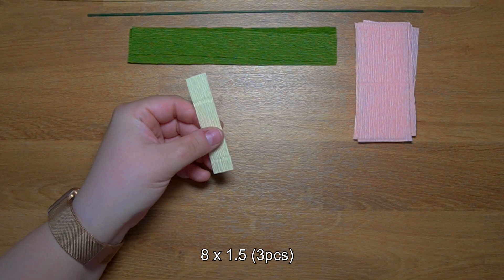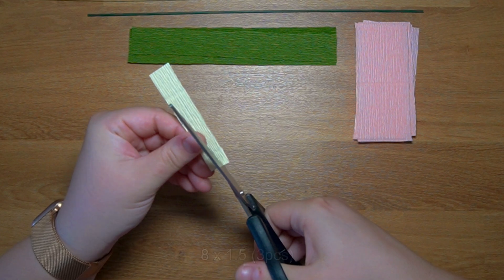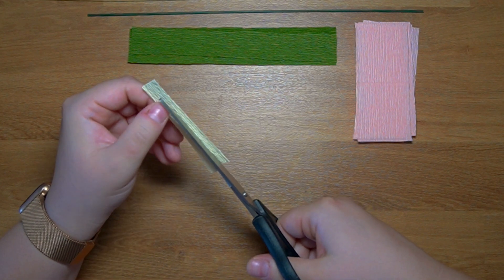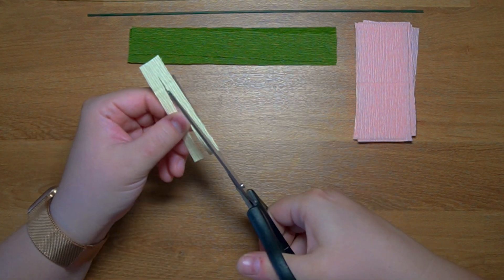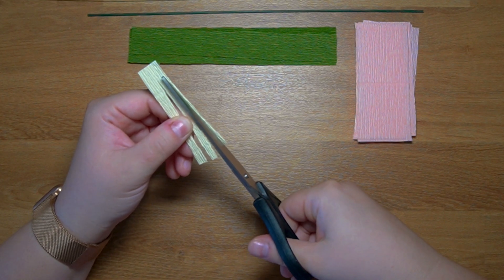First let's start working on the stamens. You'll want to cut this piece of paper in six equal pieces or at least as equal as possible.